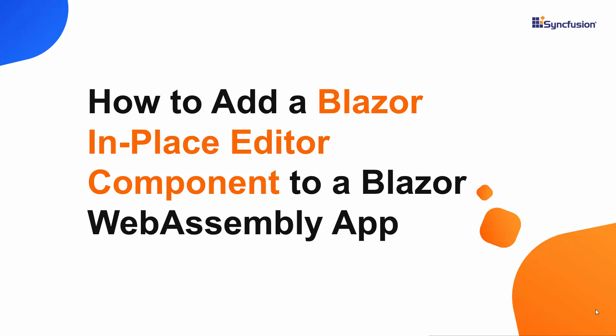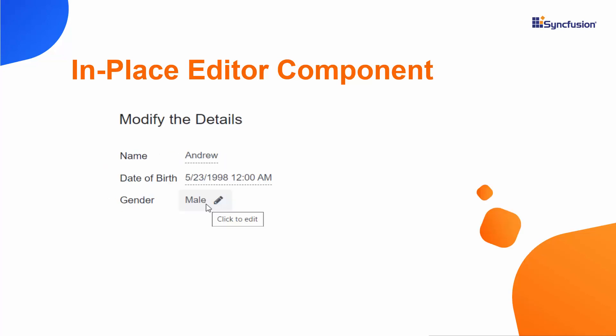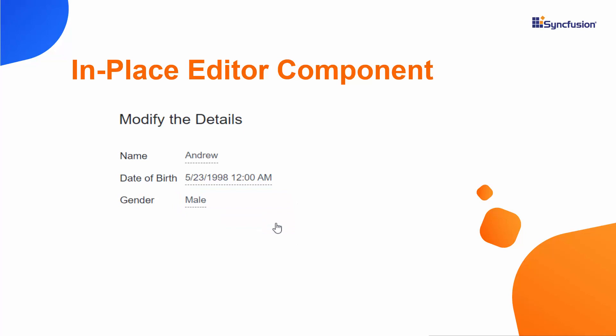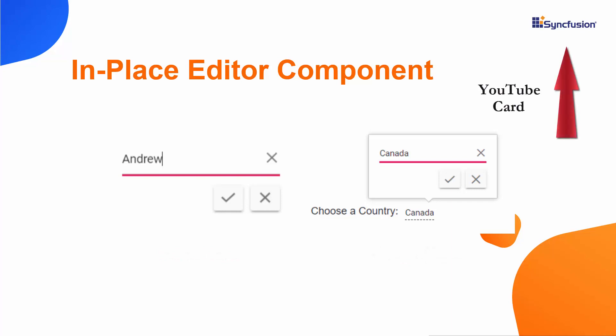Hi everyone, welcome to this video on how to get started with Syncfusion Blazor in-place editor. The editor is used for editing a value dynamically within its context and has built-in support for all the form controls including textbox, drop-down list, and date picker. The editor can be rendered in inline and pop-up modes. To explore other features available, refer to the link in the card above.